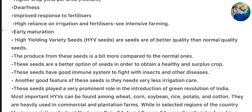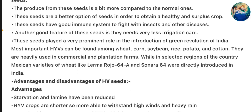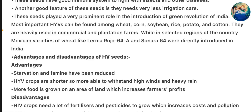These seeds have a good immune system to fight insects and other diseases. Another good feature is they need very less irrigation care. These seeds play a very prominent role in the introduction of the Green Revolution of India. Most important high yield varieties can be found among wheat, corn, soybean, rice, potato, and cotton. They are heavily used in commercial and plantation farms.